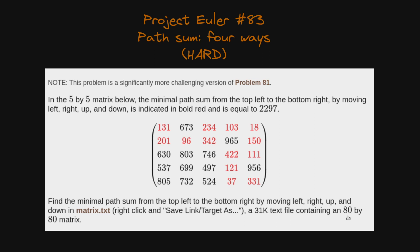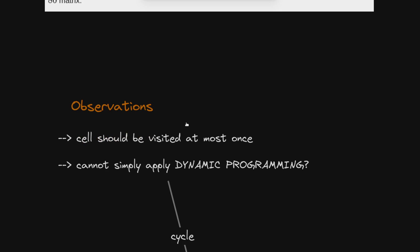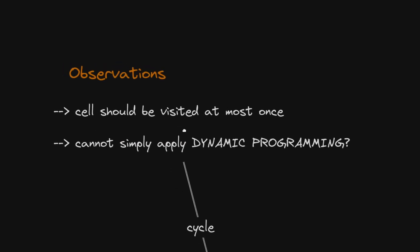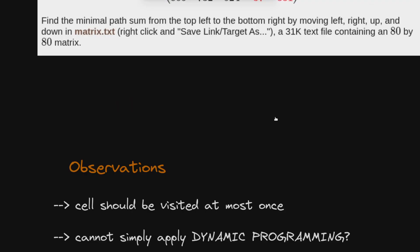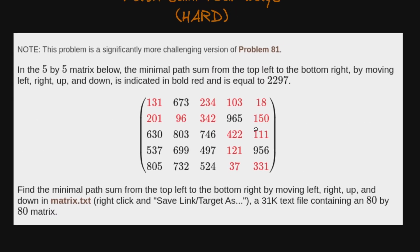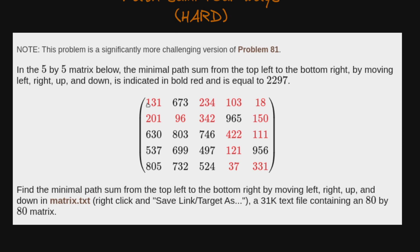We must find the path without visiting the same cell again. It's obvious that it is always better not to visit any cell again because it will increase the answer, and we want to find the path with minimal sum. It is also not allowed to revisit cells. Each cell should be visited at most once and the path should be from top-left to bottom-right.